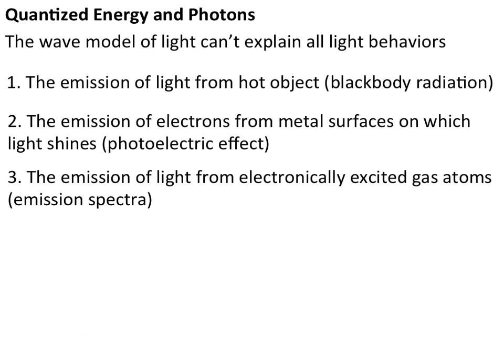We've now looked at the emission of light from hot body objects and the photoelectric effect. We understand the wave-particle duality of matter. The last thing that has not been able to be explained by the basic wave model of light is the emission of light from electronically excited gas atoms, or the production of an emission spectra. We're going to look at what an emission spectra is and what it means to be an electronically excited atom.